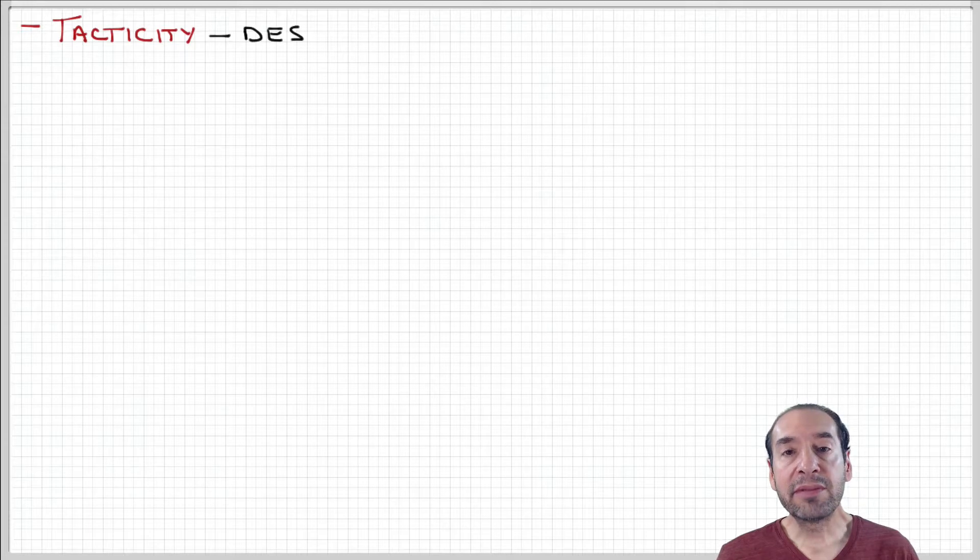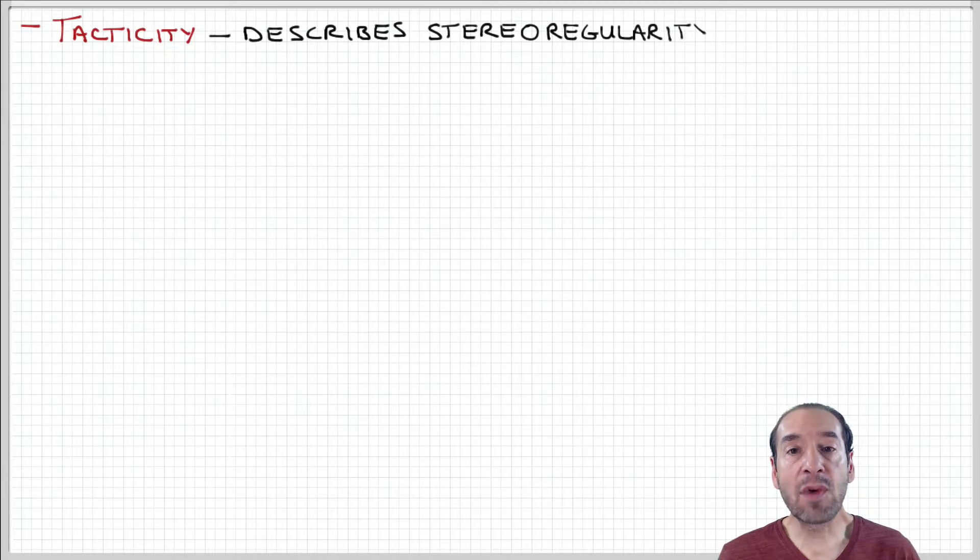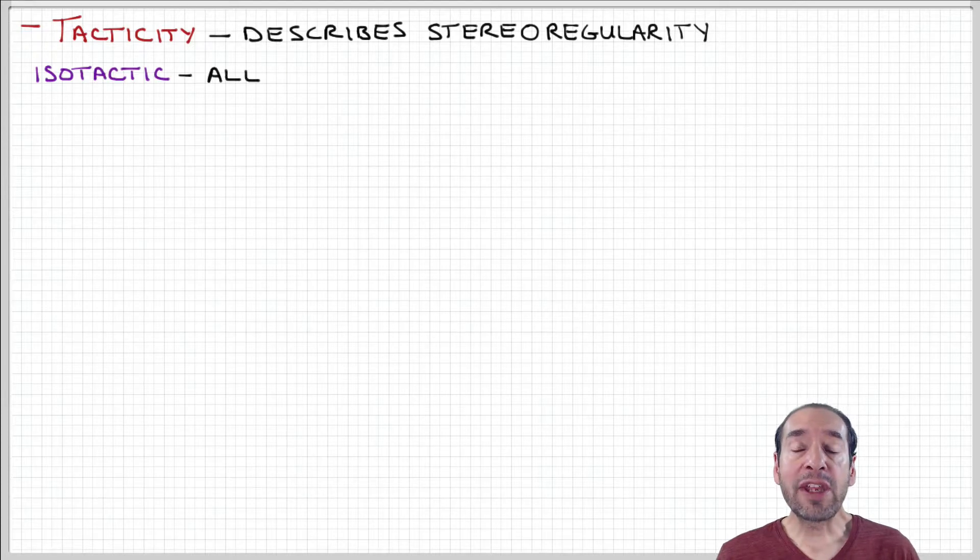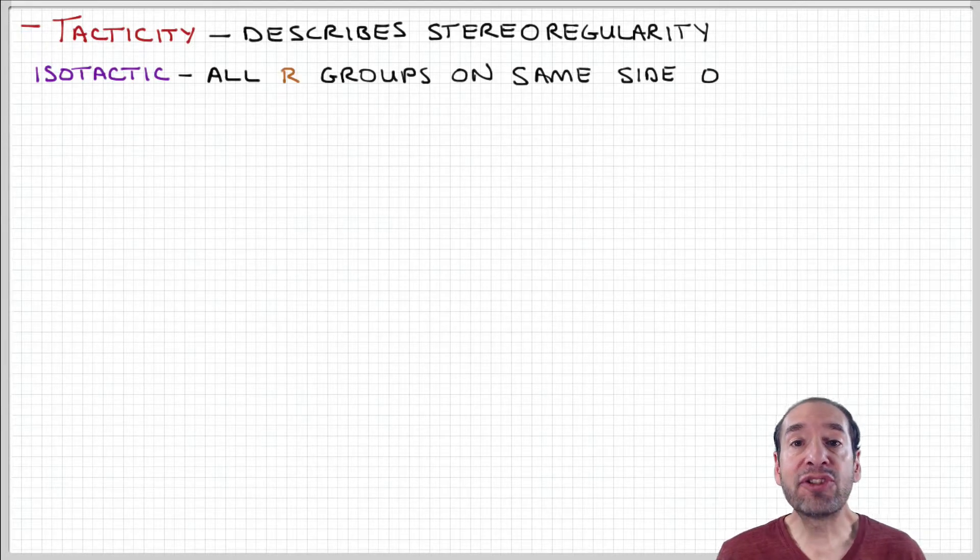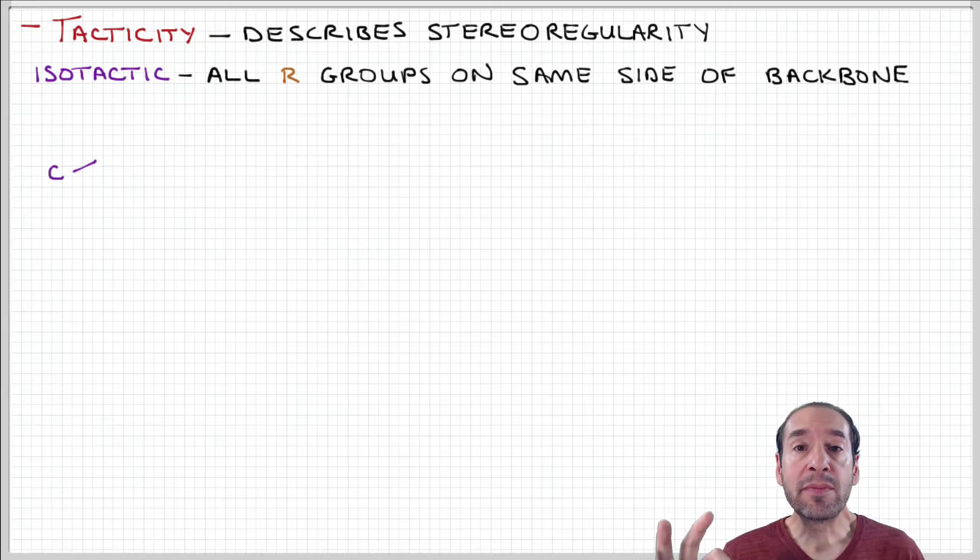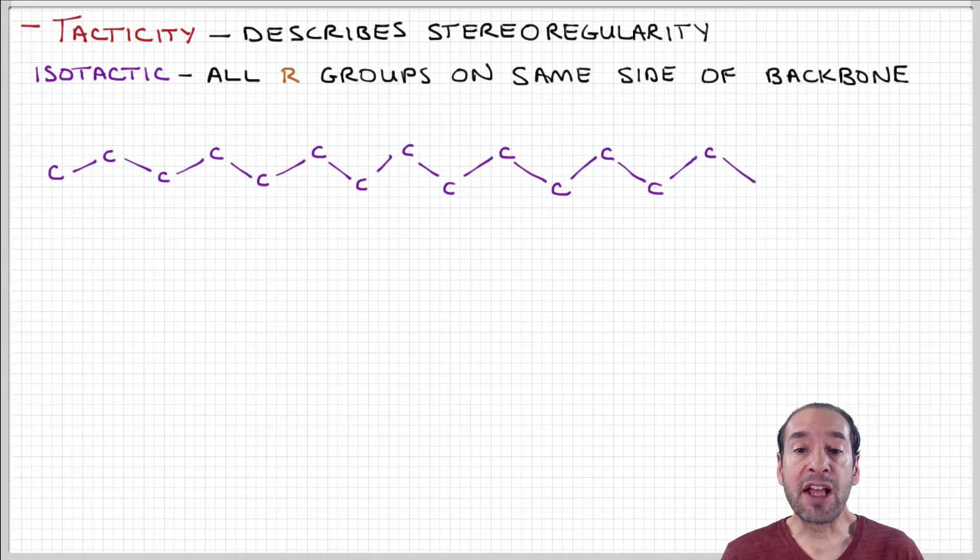So if we want to talk about whether we have a regular or an irregular distribution in a more precise way, we use this term called tacticity. And this describes more precisely the arrangement of these chemical groups along the polymer backbone.